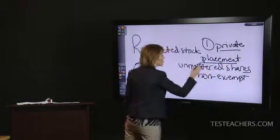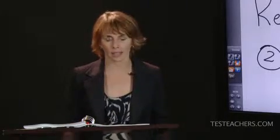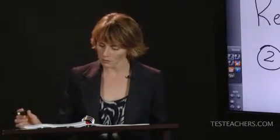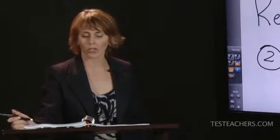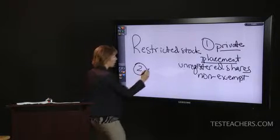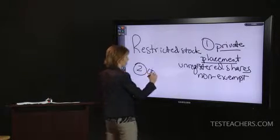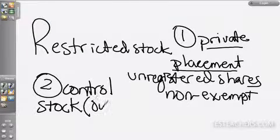Restricted stock are shares that are not freely saleable. The second type of restricted stock are shares held by an insider of a corporation. These are what we call control stock — the people who are insiders control the company, so it's controlled stock owned by insiders.